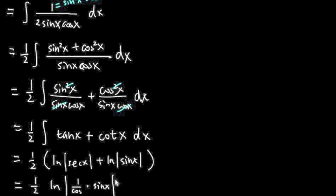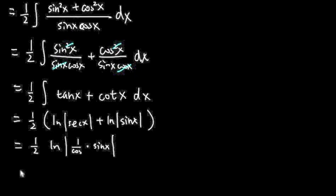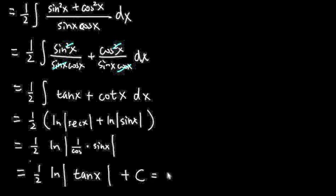And then, as you can see, this is 1 half ln absolute value. I pretty much have sin x over cosine x. And altogether, that's just tangent x. And we are done. So I can finally put a plus c right here. And that's pretty much what the integral of cosecant 2x dx is equal to.